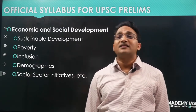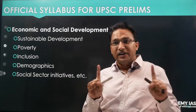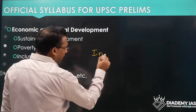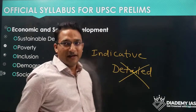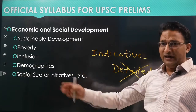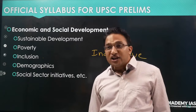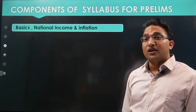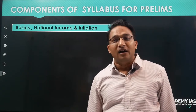The prelims syllabus for economy is indicative, not detailed. It covers sustainable development, poverty, inclusion, demographics, and social sector initiatives. The best way to identify what is actually asked is to go back to previous year questions. Based on those, we can see clearly defined concept areas: basics of economy, national income and inflation, money and banking, budget/taxation/fiscal sector, foreign sector, agriculture/industry/services, infrastructure, and social sector.